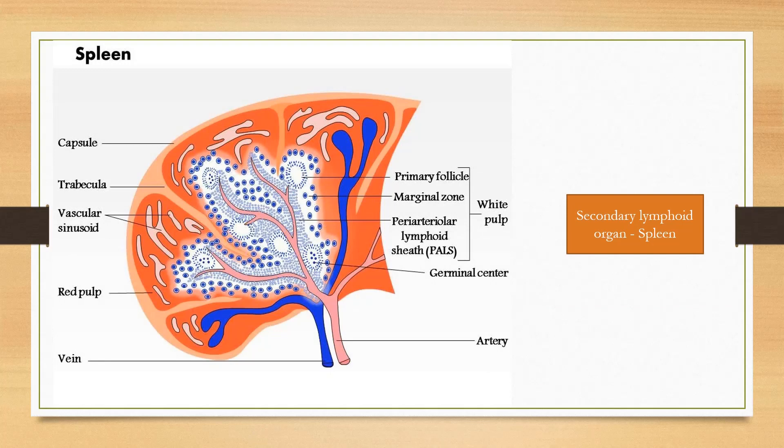Spleen is a secondary lymphoid organ. It is present in the left abdominal region. It is oval-shaped. It removes antigen present in the blood. Spleen is surrounded by capsule which divides the spleen into compartments by trabeculae. The compartments are divided into red pulp and white pulp.